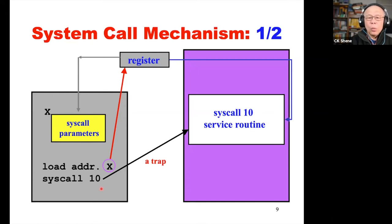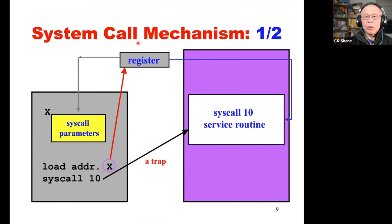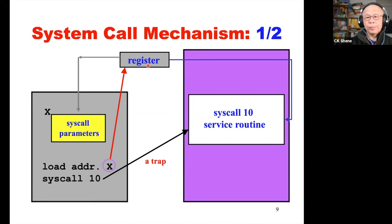When control is transferred into the operating system, the OS analyzes what system call it is. The system determines it is system call 10, so the system call 10 service routine is called. This service routine retrieves all information passed to it through the register, performs all the needed work, and saves all the needed results back to your ARGV list through that register. After the service is done, the CPU scheduler is activated to pick up a suspended process for it to continue.